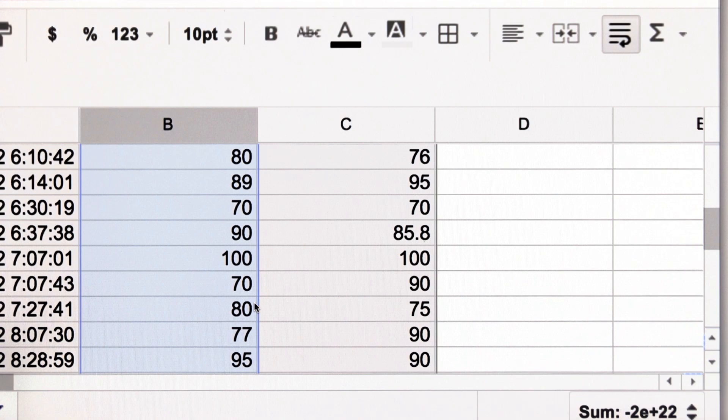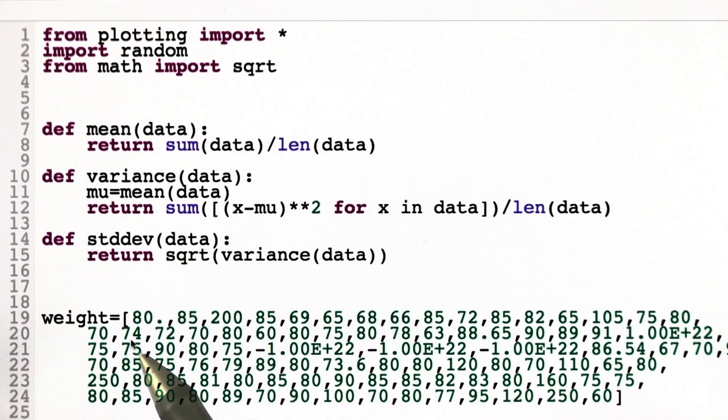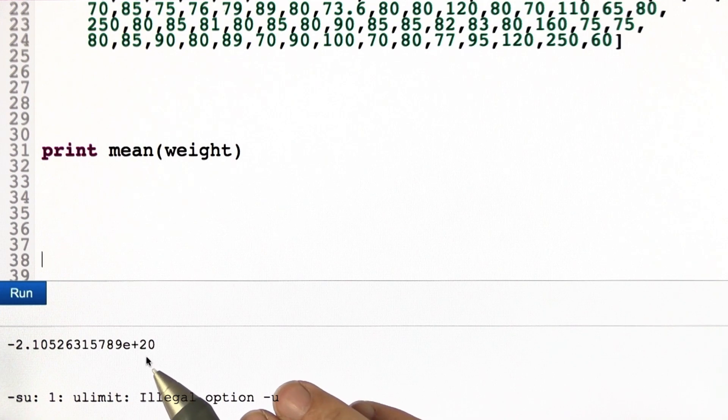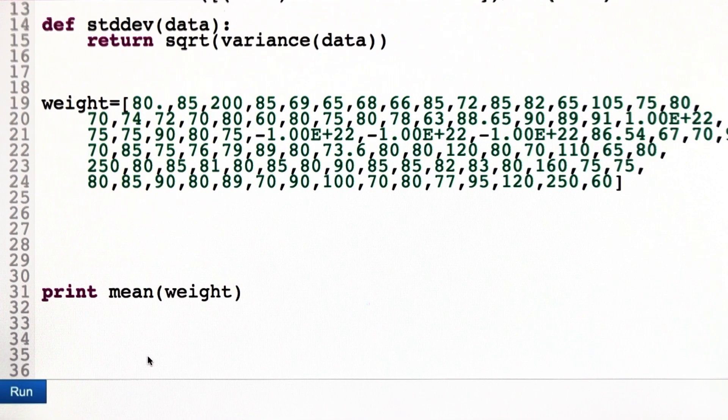So I took the guesses and added them into a large list called weight. There's just below 100 of those. And now I want to do statistics on those. The very first thing I did is I printed the mean estimate, and it turns out to be negative. It's minus 2 to the 1, 0, to the 10 to the 20th.